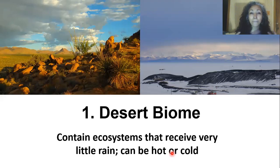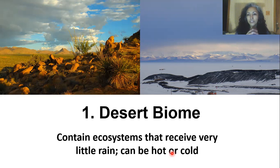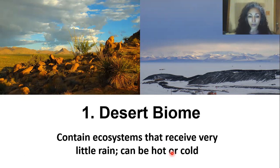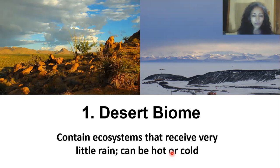First, the desert biome. I see a picture of really hot land and a picture of really cold land. Did you know that deserts on Earth can be either hot or cold? The definition of a desert is a land that receives very little rainfall — fewer than 20 centimeters a year. What you're looking at on the right is Antarctica. That land at the bottom of the world is considered desert biome because of the lack of rainfall.